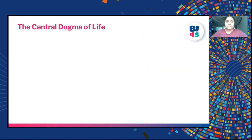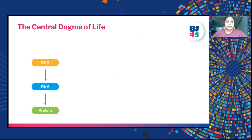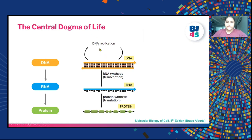The central dogma of life, through a biological perspective, is that DNA makes up the RNA which acts as a messenger to translate into protein, which are the functional units of life. DNA maintains itself through replication, can also lead to RNA synthesis — that is transcription — and this RNA can further lead to protein synthesis, which is also called translation.